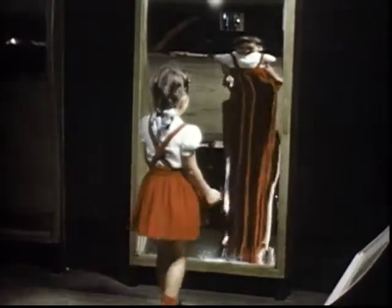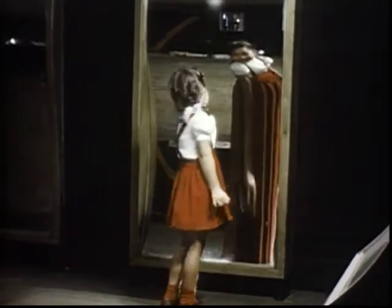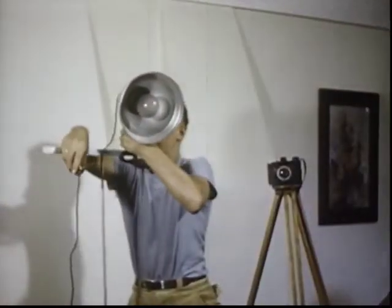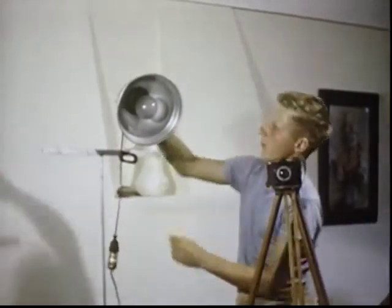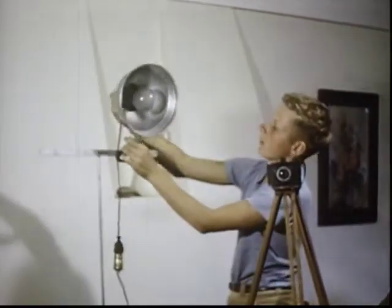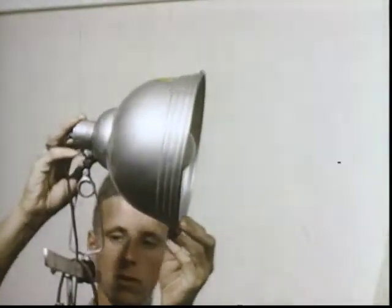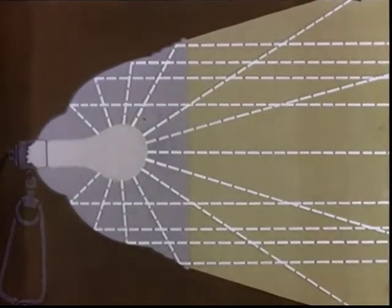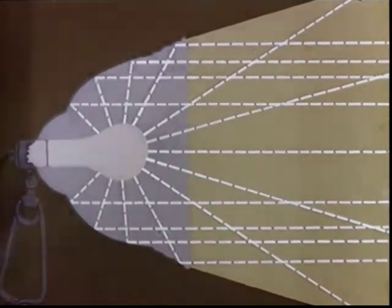These principles are used in the trick mirrors you often see in amusement parks. Bud makes a more practical use of a curved mirror when following his hobby of photography. The interior surface of this reflector is curved so that the light is directed toward the picture-taking area. That's what happens when light is reflected from things.